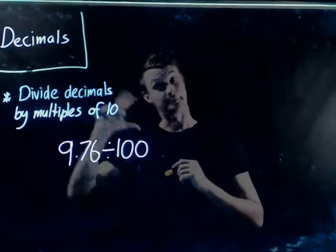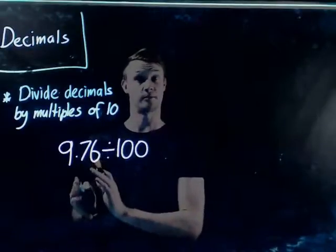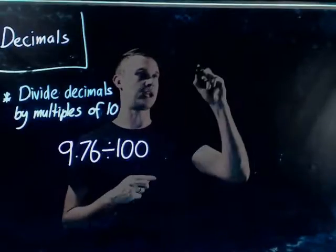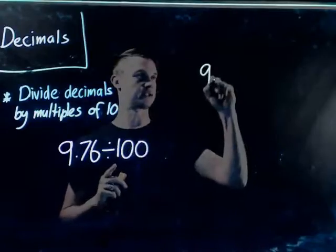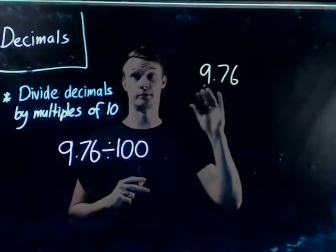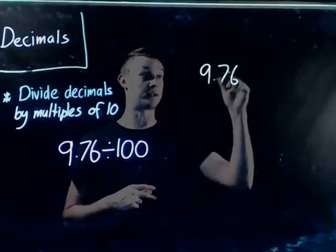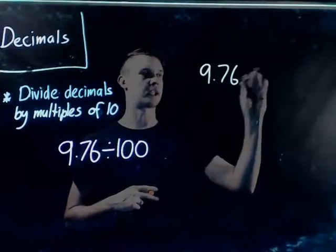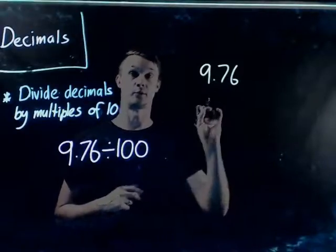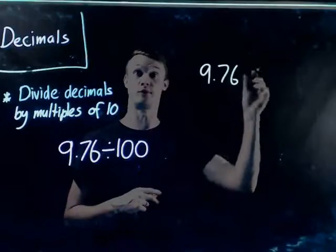We need to think back to when we did multiplication by decimals. If we had 9.76 and we multiplied it by 100, meaning we made it bigger, all we had to do was count how many zeros or decimal places it needed to move and then just moved it to the right.